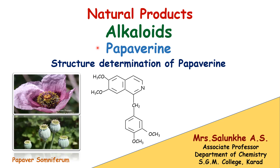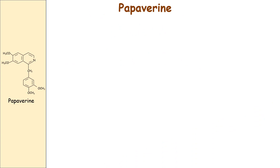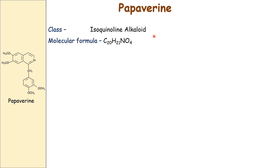Let us study another alkaloid under the lecture series of natural products: papaverine. In this video, we learn how the structure of papaverine can be determined. Papaverine's class is isoquinoline alkaloid. The basic ring unit present in papaverine is isoquinoline, and therefore its class is isoquinoline alkaloid.